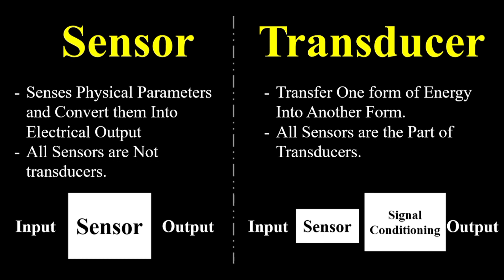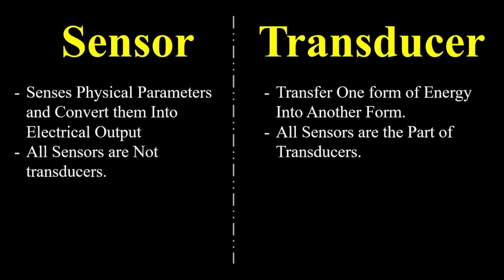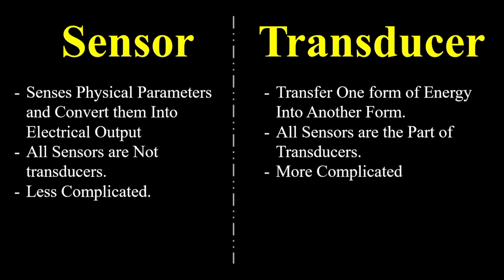Comparatively to the transducer, sensors are less complicated — they are just measuring a value and giving some indication. Transducers are more complicated because they have to measure, pass it to the signal conditioning unit, convert it into another form, and lastly give us the indication or final result used by further parts. As it includes processing or signal conditioning, that makes transducers more complicated.